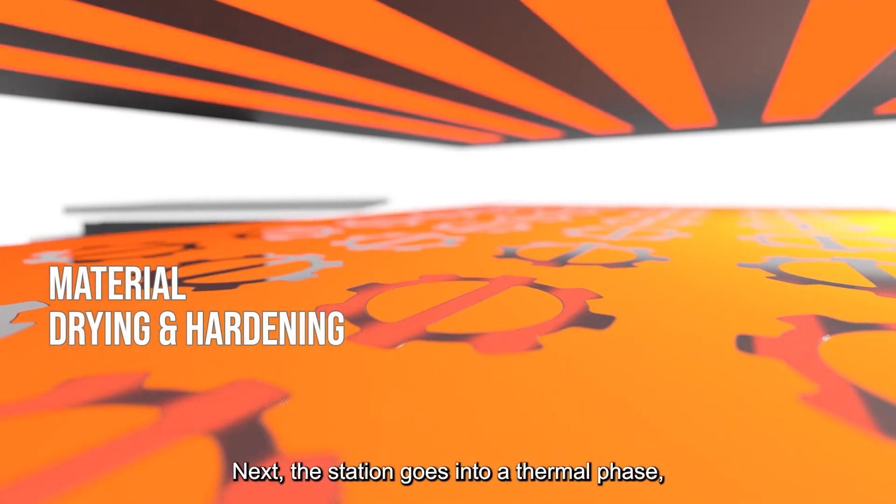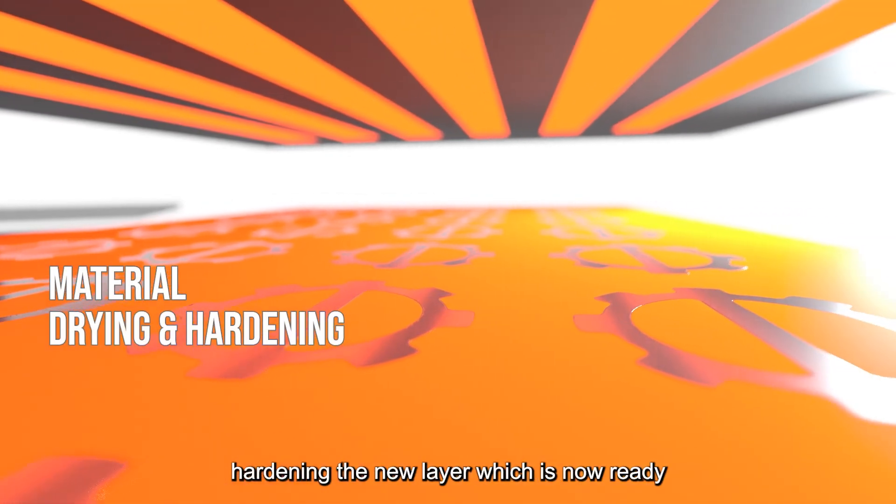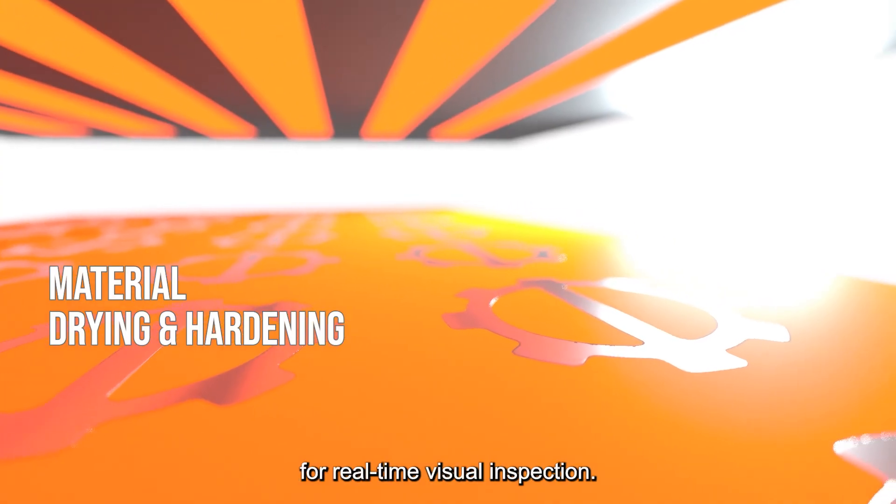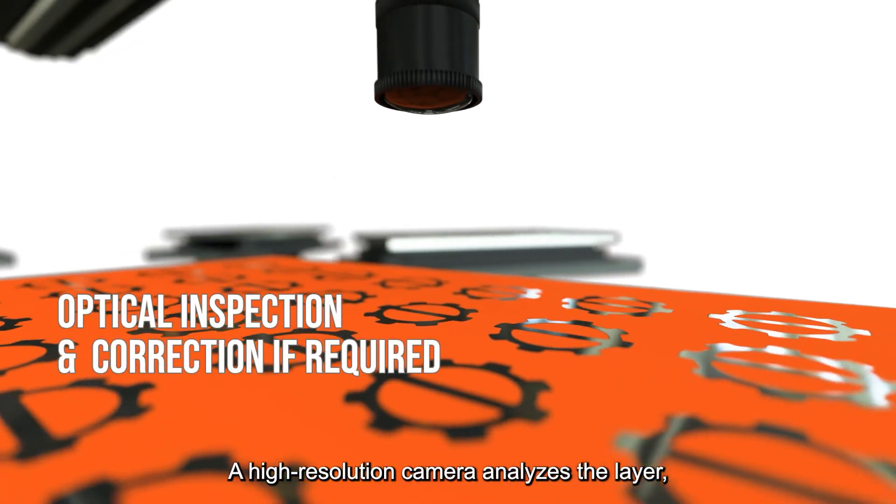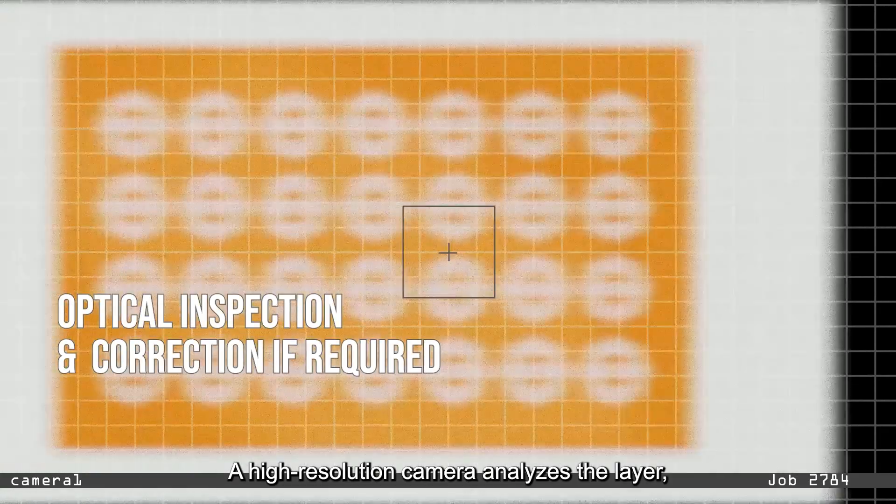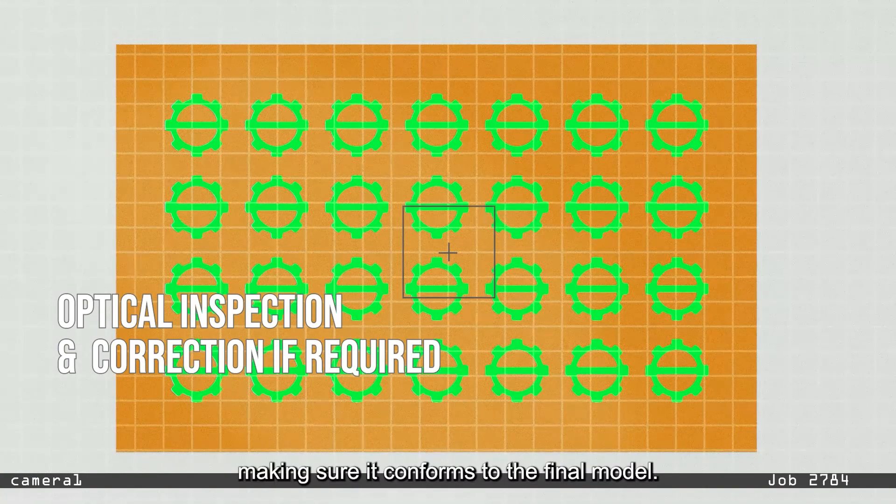Next, the station goes into a thermal phase, hardening the new layer, which is now ready for real-time visual inspection. A high-resolution camera analyzes the layer, making sure it conforms to the final model.